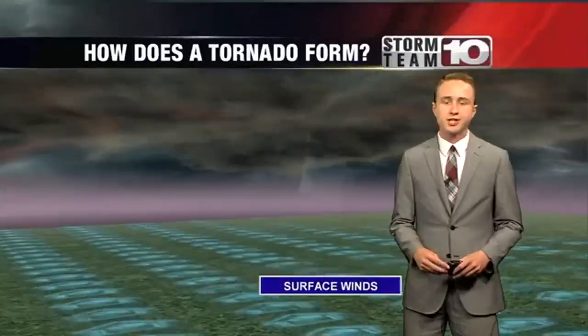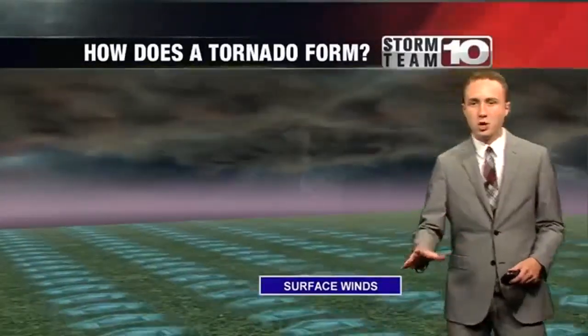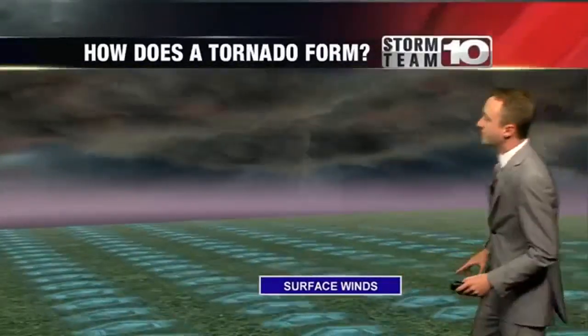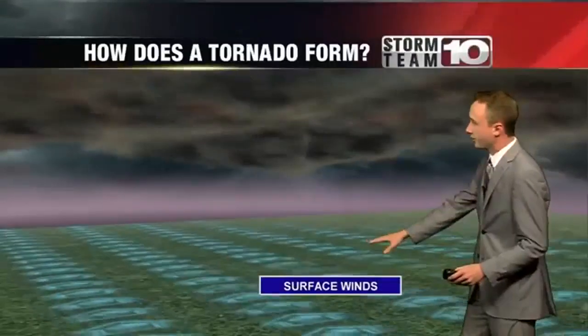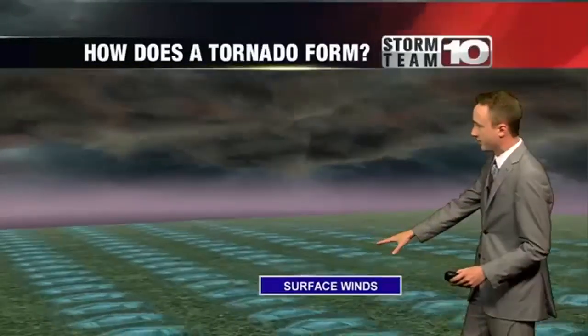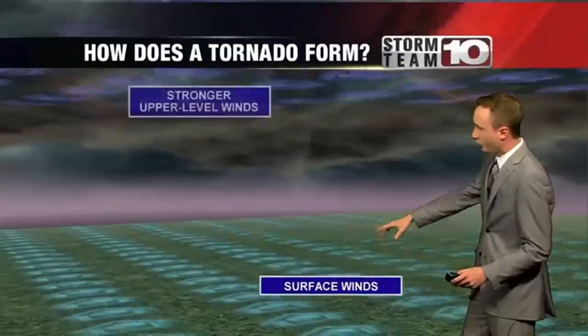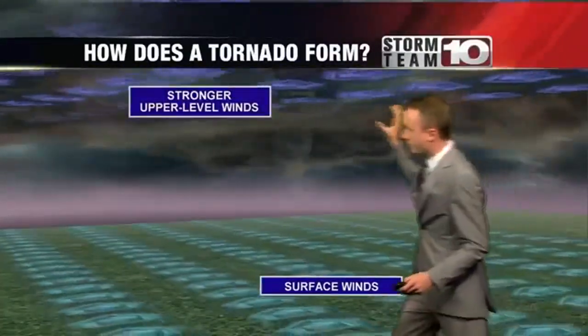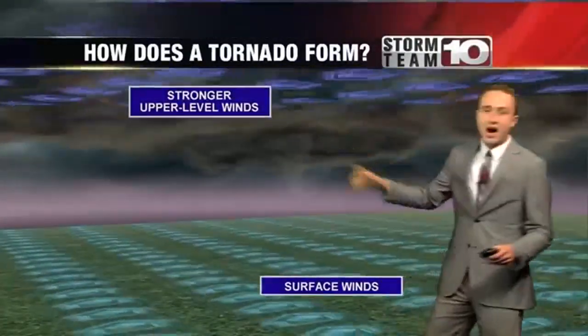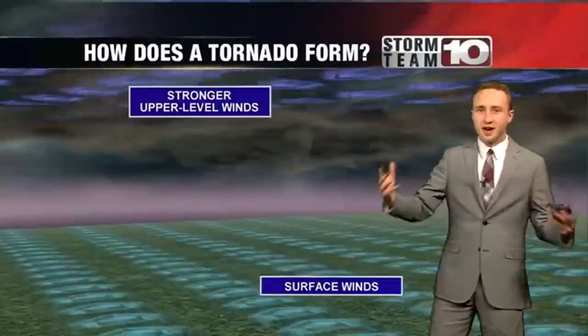It's already been an active weather season across the Wabash Valley, and tornadoes are one of the most dangerous kinds of severe weather. But how exactly do they form? First, you need surface winds — this is the first ingredient of a tornado — and of course you need stronger winds higher up in the air.